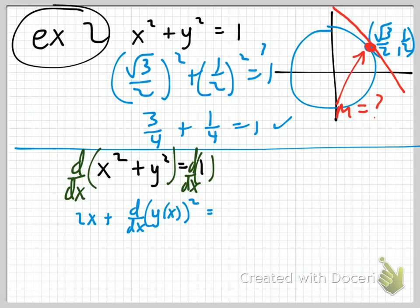Sometimes you see y squared and you think it's just 2y because x squared is 2x. Well, it's a good instinct to have, but it's not true — we have to use the chain rule.